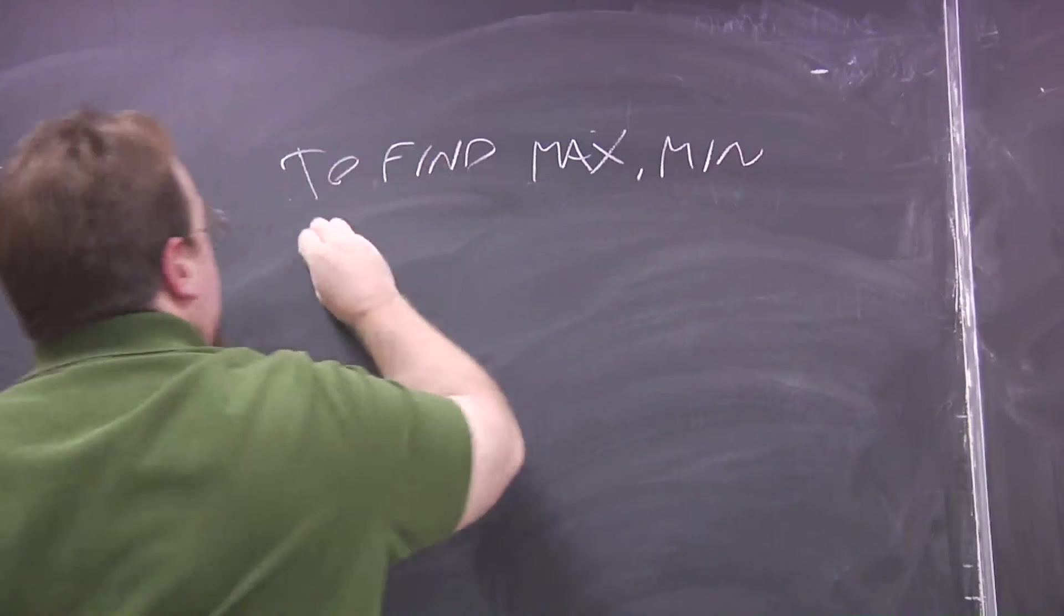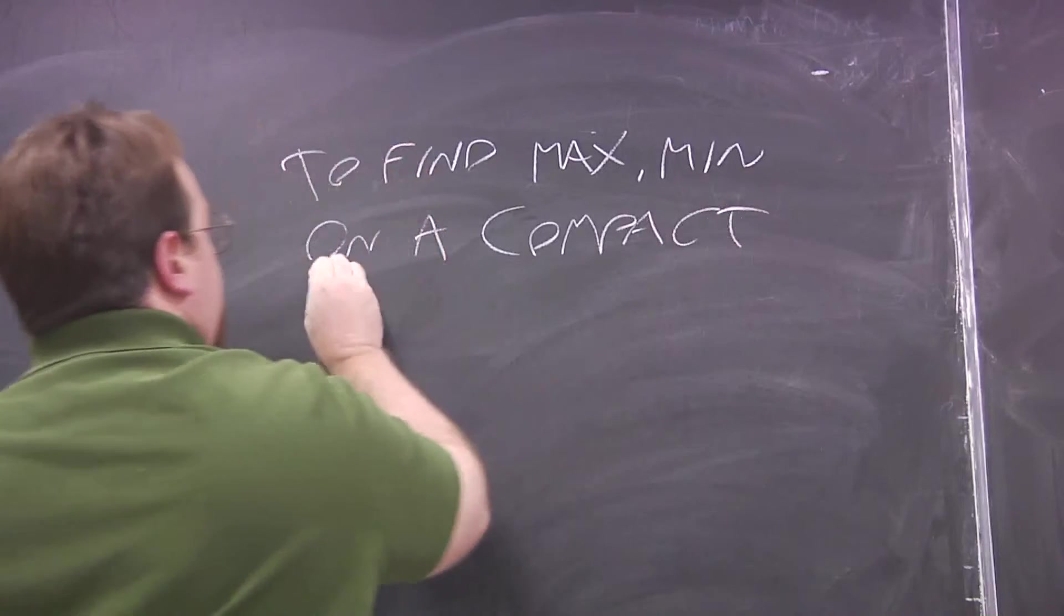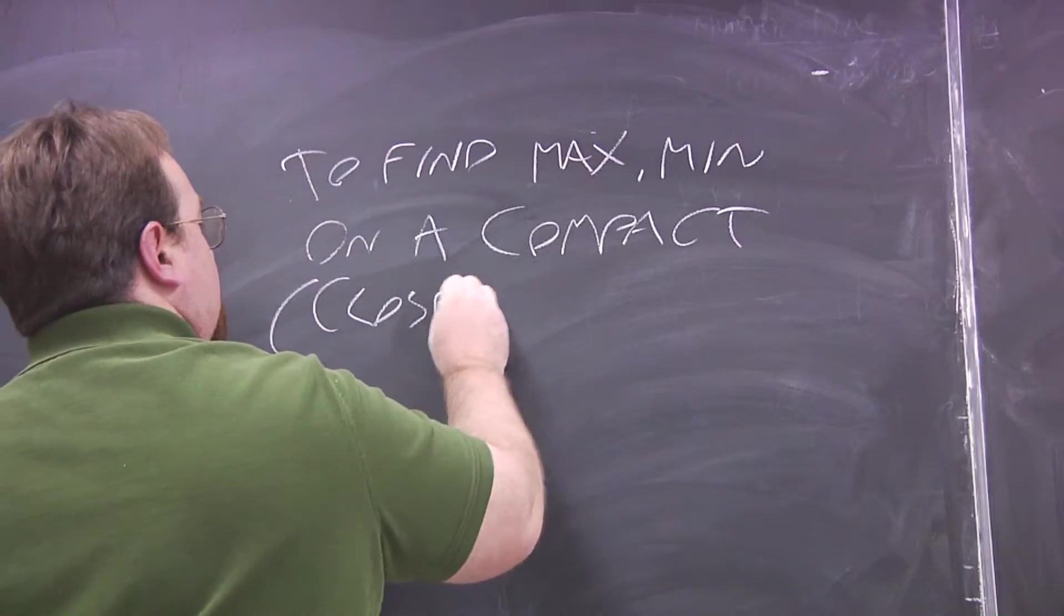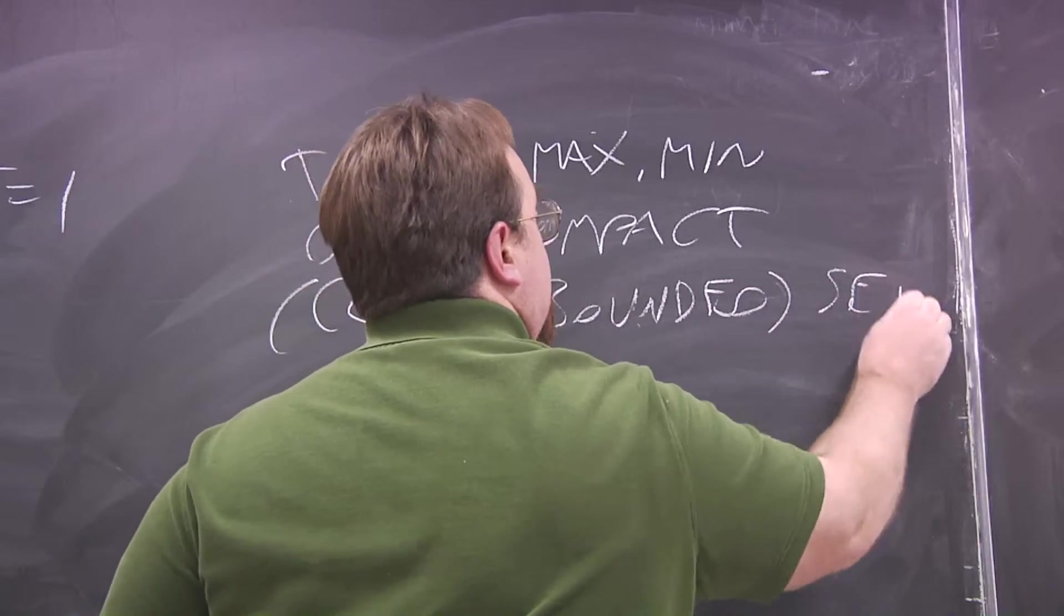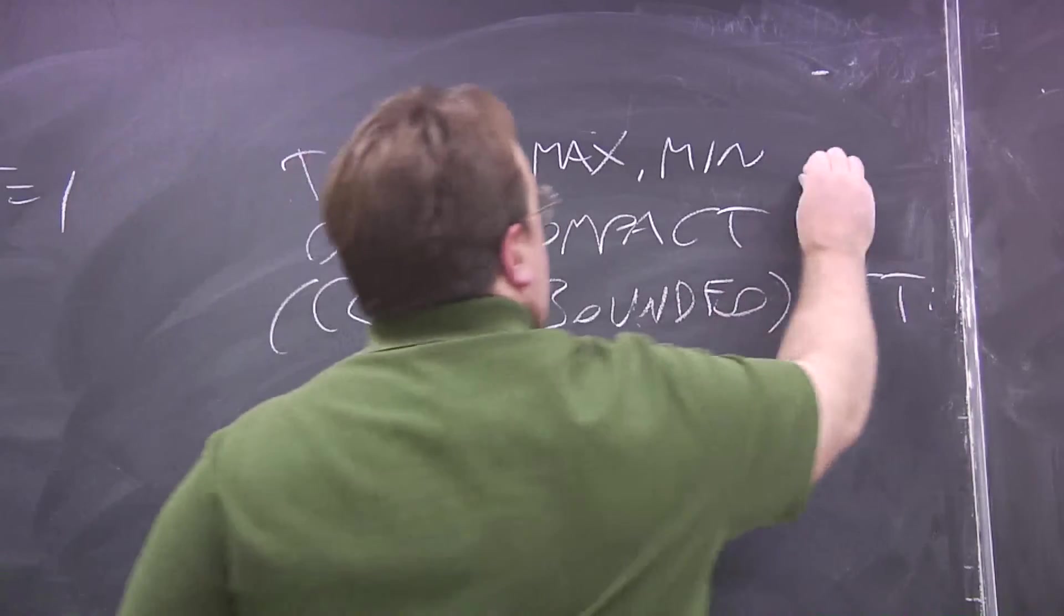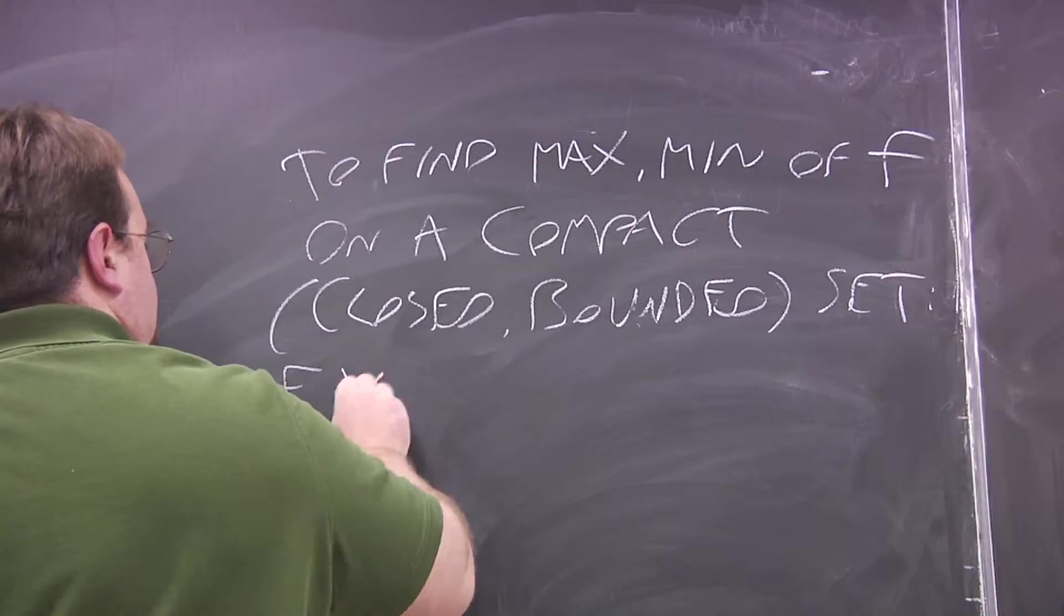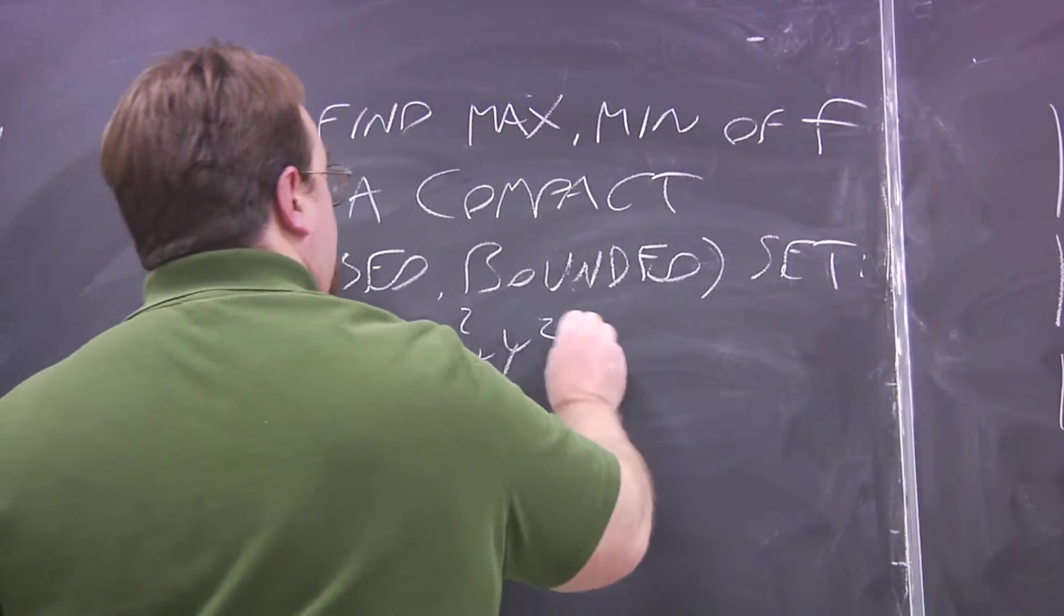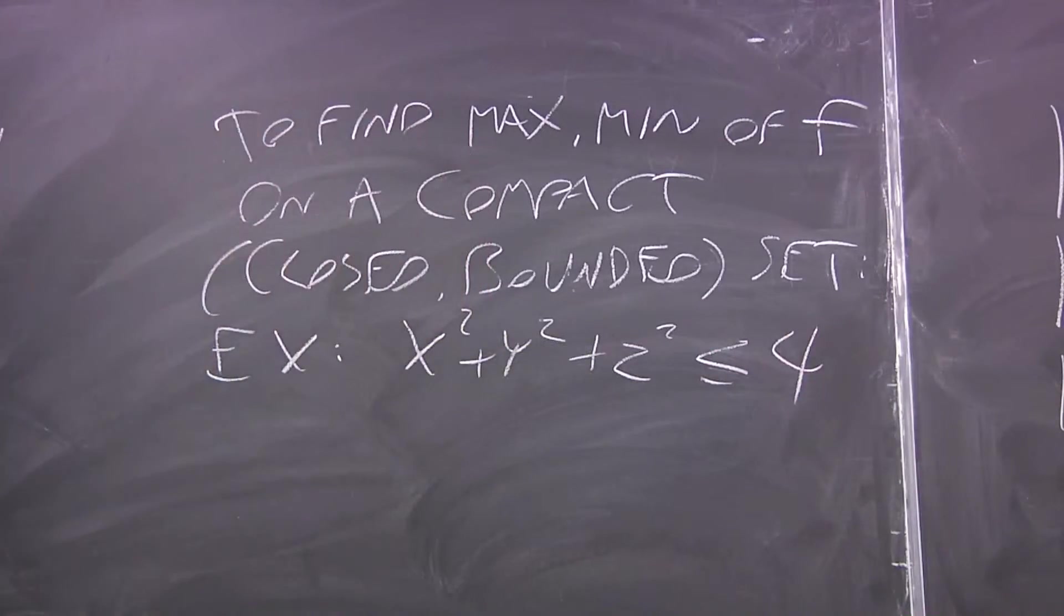Find max or min on a compact, which is closed and bounded, sets. An example of that would be, for instance, X squared plus Y squared plus Z squared is less than or equal to 4. So it's the sphere of radius 2 and the ball contained inside it, the interior and the containing sphere.